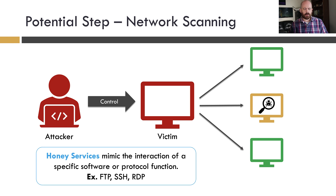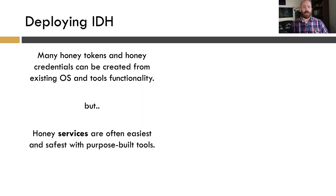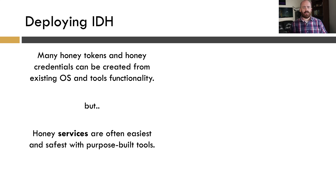These are really the three main ways I see attackers operating after initial compromise. We cover a lot of use cases with intrusion detection honeypots. Many honey tokens and honey credentials can be created from existing OS functionality and tools — I like to think of this as 'LOL-IDH,' living off the land IDH, because we're using existing operating system functionality. Honey services are a bit trickier — you can use legitimate services, but I find it time consuming and you can potentially expose attack surface you don't want.